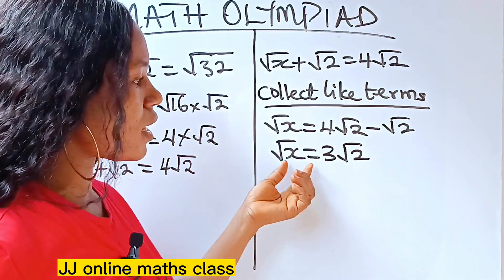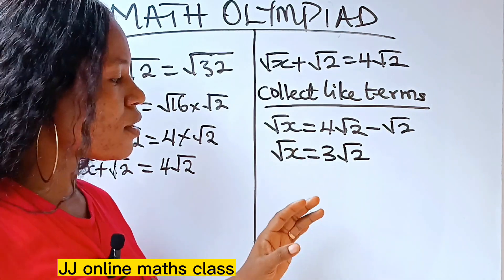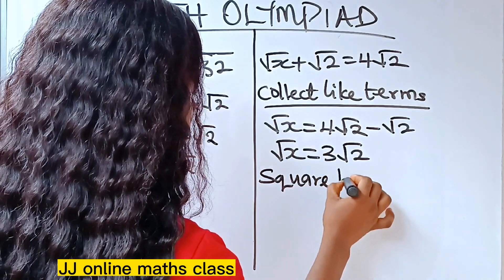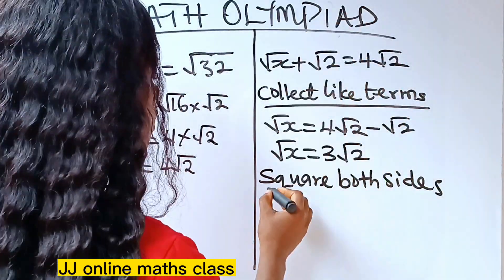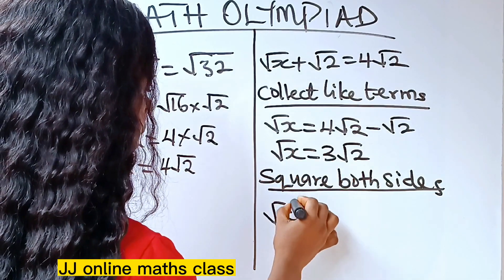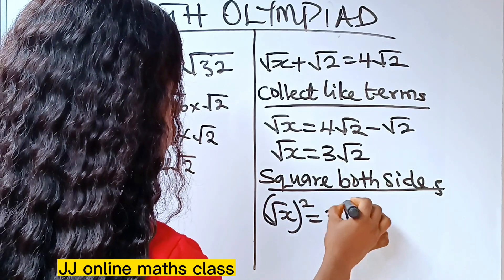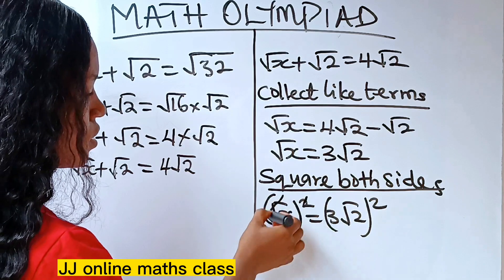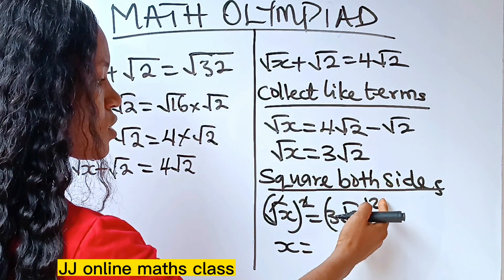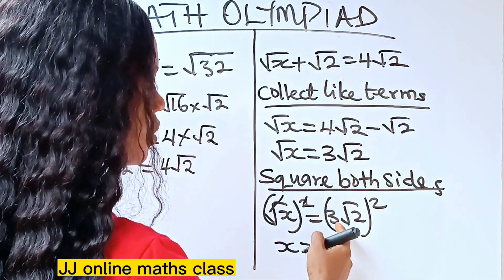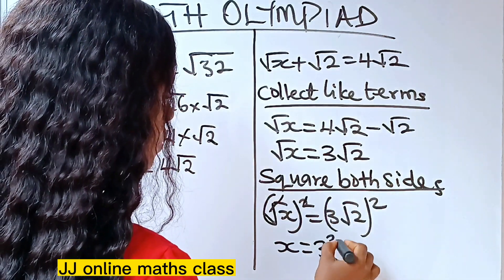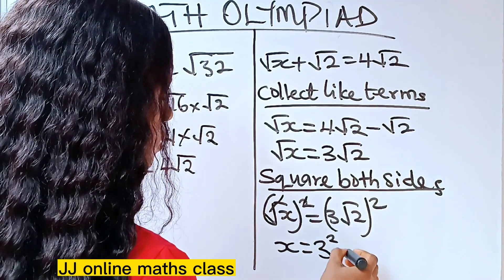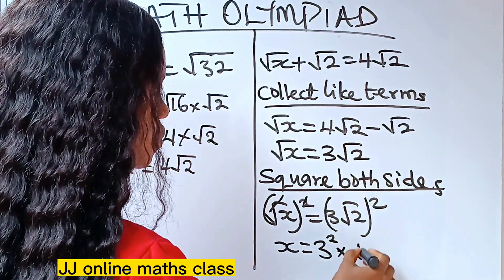We are looking for x, not root x. To remove the square root sign, we square both sides. So root x squared equals (3 root 2) squared. The square cancels the root on the left, leaving x. On the right, this square applies to both 3 and root 2 — so we have 3 squared multiplied by root 2 squared.